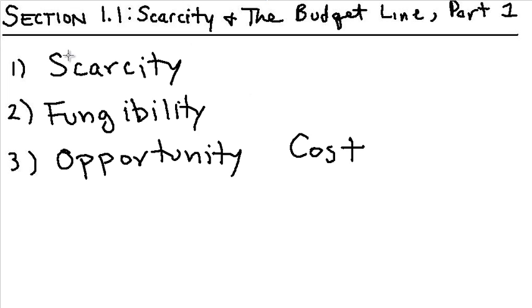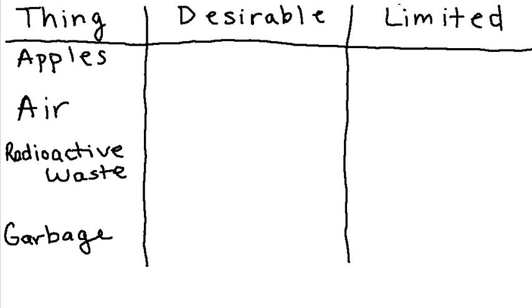The first concept is scarcity, the second one is fungibility, and the third is opportunity cost. As we proceed in these lessons, you're going to get more of an intuition of how these things are related and why they are so important to economics. We'll start by talking about the first one, scarcity.